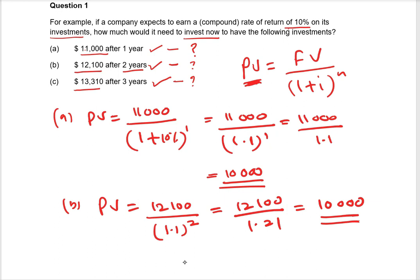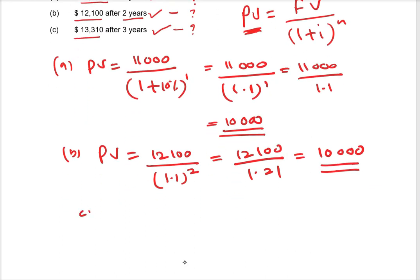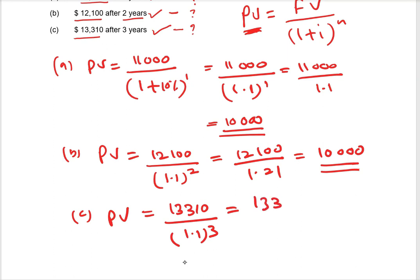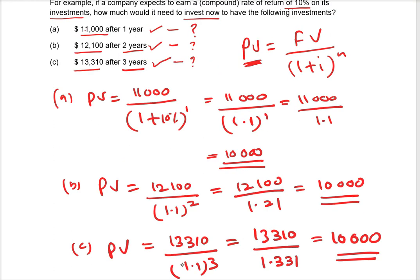The third part: present value equals thirteen thousand three hundred and ten divided by 1.1 to the power three. Simplifying, 1.1³ equals 1.331, so thirteen thousand three hundred and ten divided by 1.331 gives you ten thousand. So to get thirteen thousand three hundred and ten after three years, you need to invest ten thousand dollars.